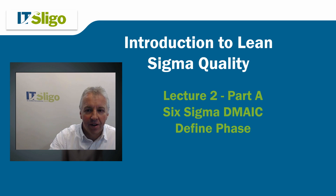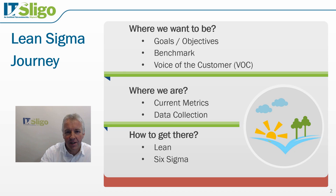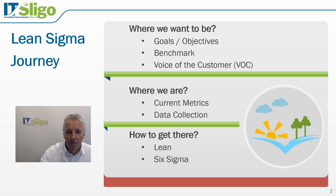Recalling from an earlier lecture, we're on a journey. Before we get into the detail of DMAIC, we're asking ourselves where do we want to be — certain goals and objectives — and we'd like to listen to our customer, understand where they'd like us to be with better quality product or service. We then identify where we are, what the current metrics are, how to collect that data, and then how to get there using lean tools.